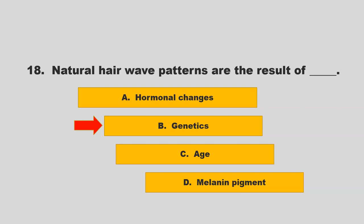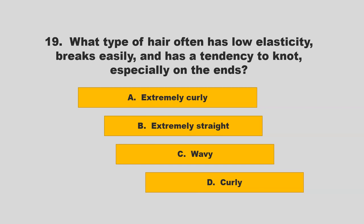What type of hair often has low elasticity, breaks easily, and has a tendency to knot especially on the ends? Is it extremely curly, extremely straight, wavy, or curly? If you chose A, extremely curly, you are correct.